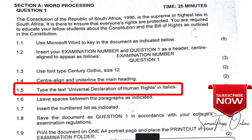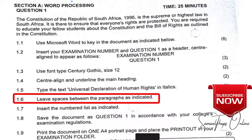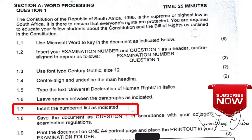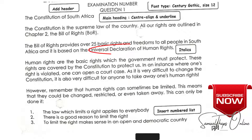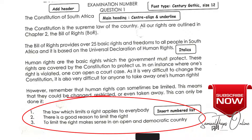You have to make sure that Universal Declaration of Human Rights is in italics as indicated. Instruction 1.6 says leave spaces between the paragraphs, so your paragraphs must never be joined together. Instruction 1.7 is the numbered list as indicated at the bottom. If you look at the paragraph you should create as displayed on the screen, all the instructions I mentioned can be seen — we have a header, a centered main heading, and the Universal Declaration of Human Rights in italics.